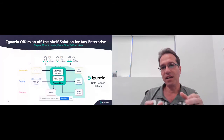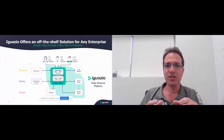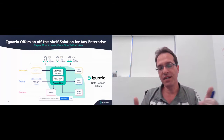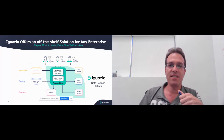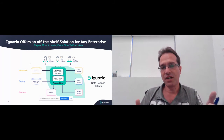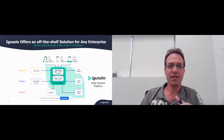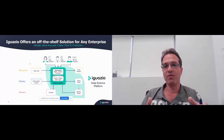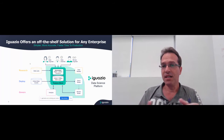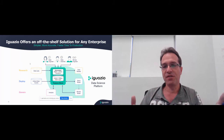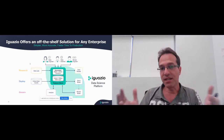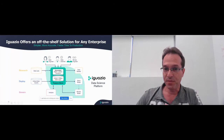By doing that you get a much faster process from development to production, plus other benefits like a catalog of features — you can share and reuse features. As a data scientist, when you start a project you don't need to start from scratch. You can go to the catalog and identify features that already exist, which can save a lot of time especially in large organizations with many projects and data scientists. You can speed up your development process significantly.